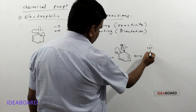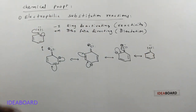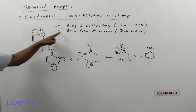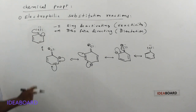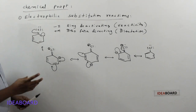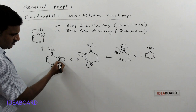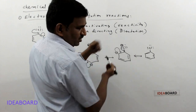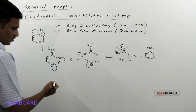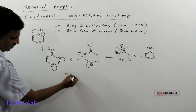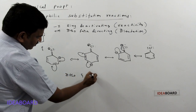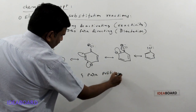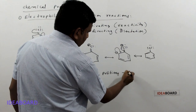This type of resonance structure is shown because of the electron donating nature or plus-M effect of chlorine. If you see where the more electron density is on the benzene ring — the ortho position to chlorine and the para position to chlorine show increased electron density. So at ortho and para positions, electron density increases.